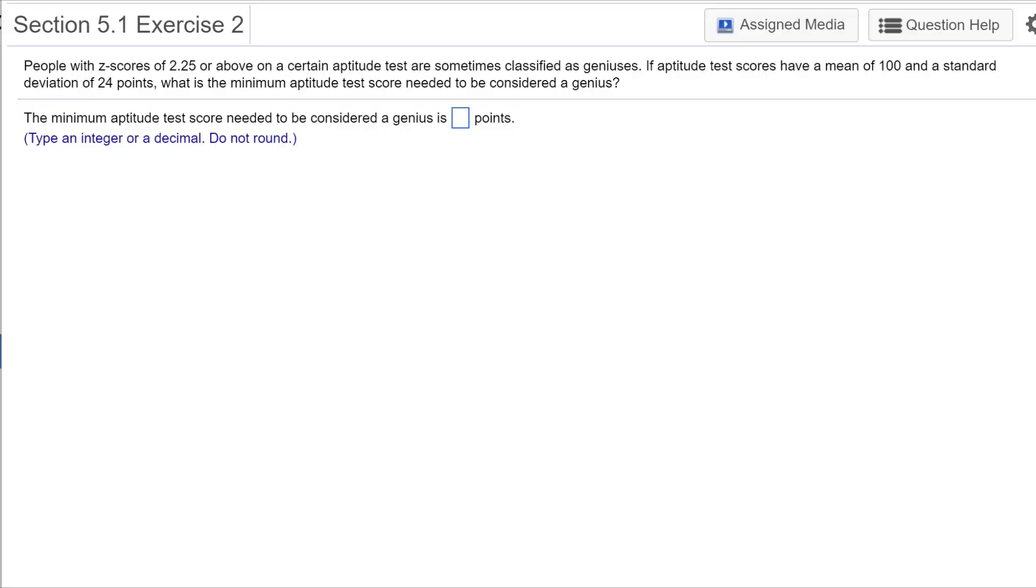People with a z-score of 2.25 or above on a certain aptitude test are sometimes classified as geniuses. If aptitude test scores have a mean of 100, standard deviation of 24, what is the minimum aptitude test score needed to be considered a genius?